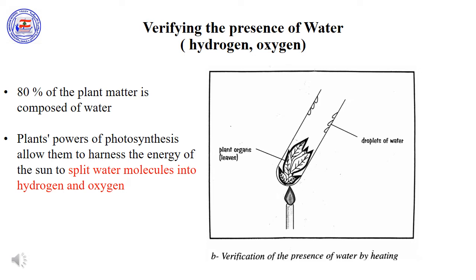Exactly 80% of the plant's matter is water. Due to photosynthesis, some of the water molecules split into hydrogen and oxygen. Therefore, the two chemical elements constituting the organic matter are hydrogen and oxygen.